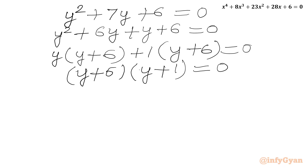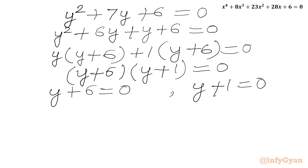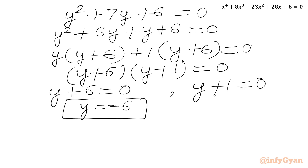Now we will use the zero product rule. We can write either y plus 6 equal to 0, or y plus 1 equal to 0. From the first equation, subtracting 6 from both sides, we get y equal to negative 6. From the second equation, subtracting 1 from both sides, we get y equal to negative 1.